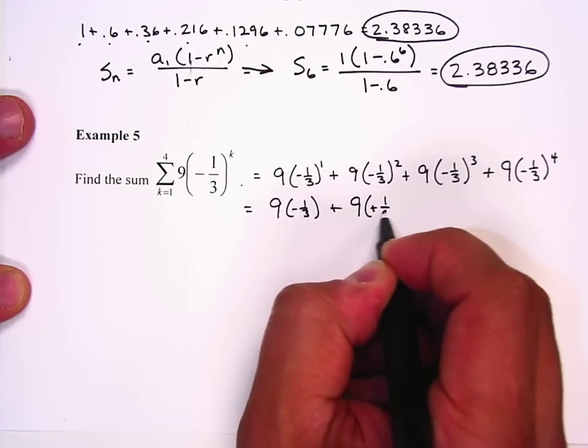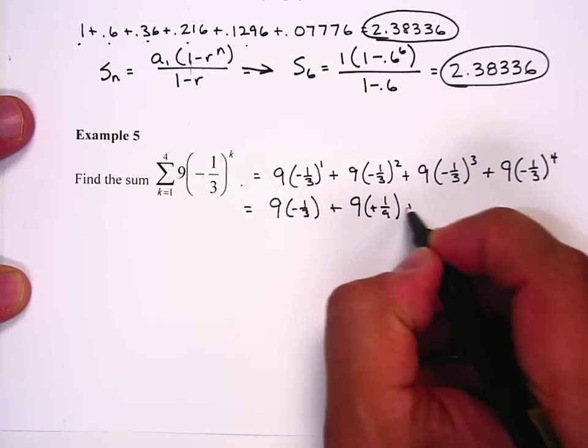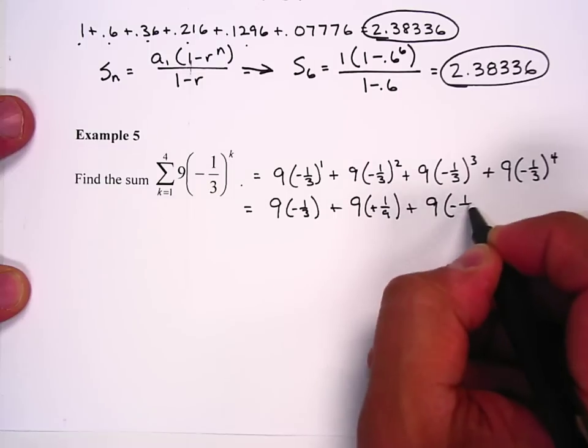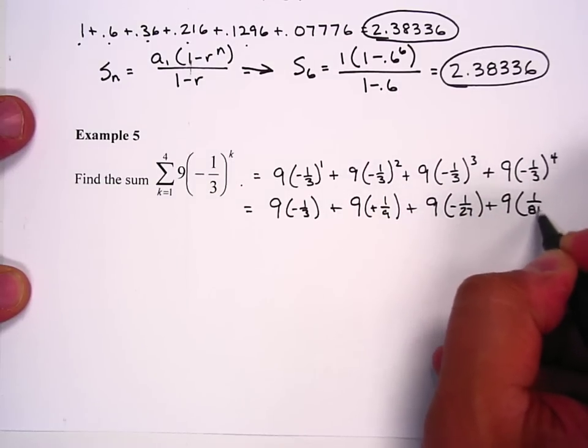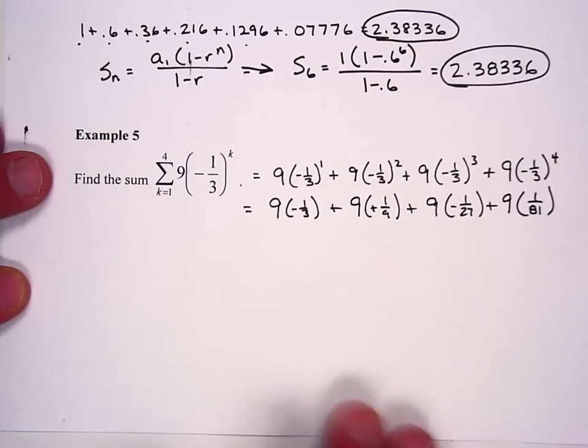So all I did was the exponent part. Now I get -3 + 1 - 1/3 + 1/9.